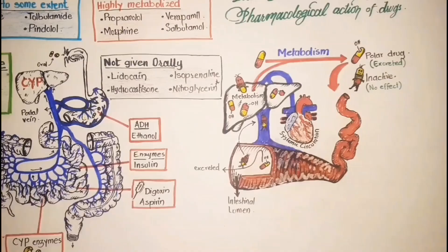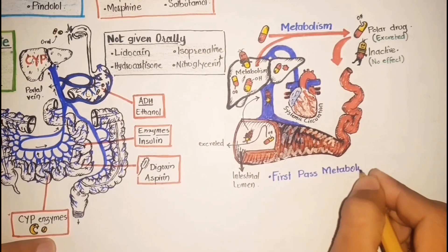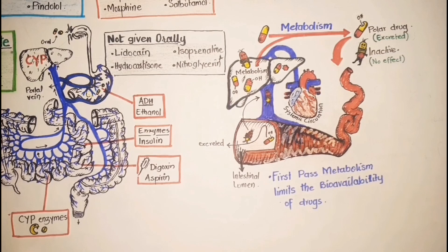Thus, first pass metabolism by the intestines or the liver limits the bioavailability and consequently the efficacy and potency of many oral medications. In the same way, many drugs are given in large doses orally as compared to their parenteral or normal doses due to their first pass metabolism.